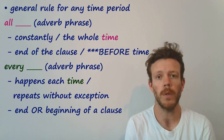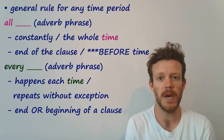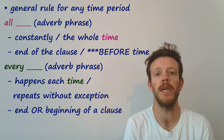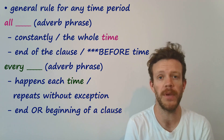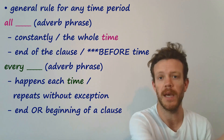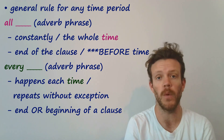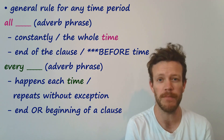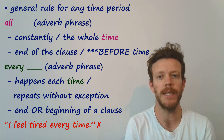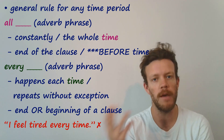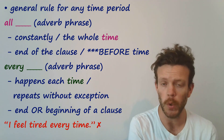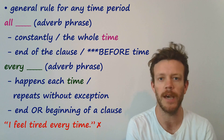So that's the general rule. Always remember: 'all' to mean constantly, the whole of a period of time. 'Every' to mean repeating without exception. Generally, the mistake is using 'every' where students want to use 'all.' So be careful there.